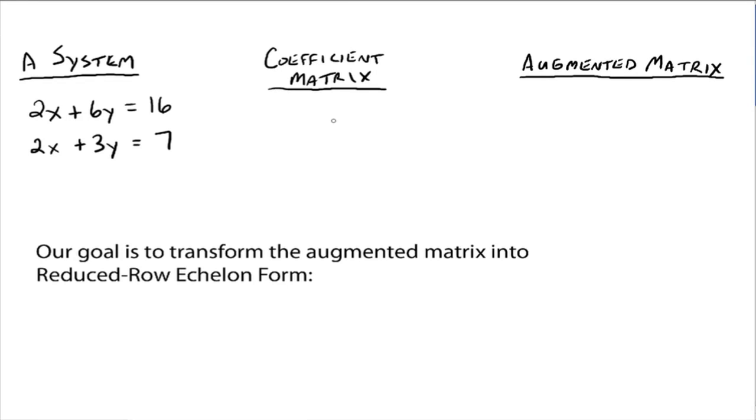And literally that is a matrix that contains nothing but the coefficients of your variables. Alright, so in this case you've got, I view this as kind of an x column, a y column, and the answer column, so to speak. It's actually called the constant column.